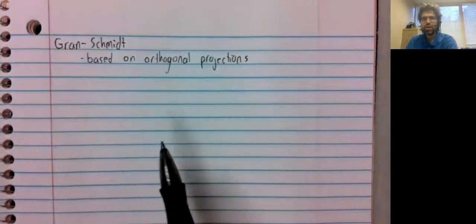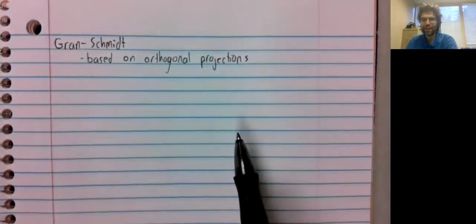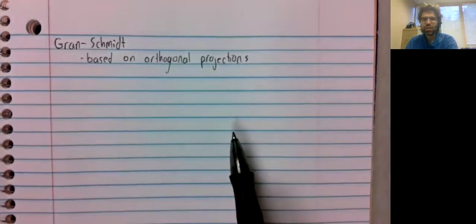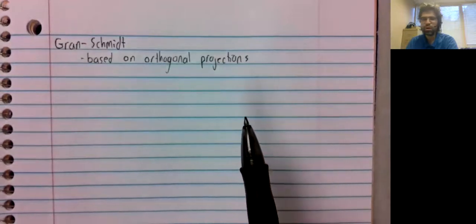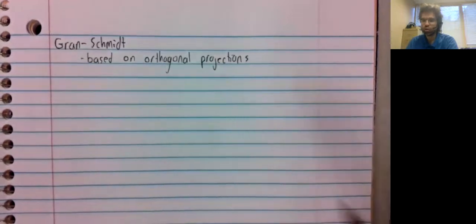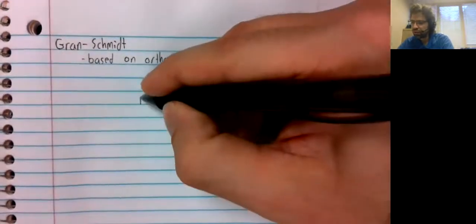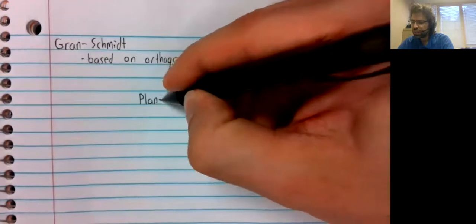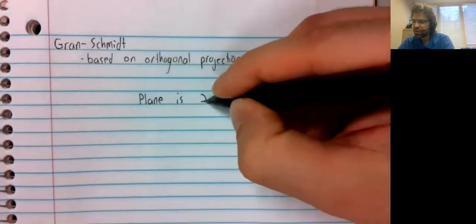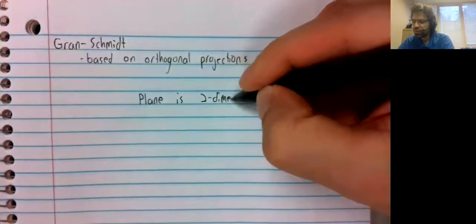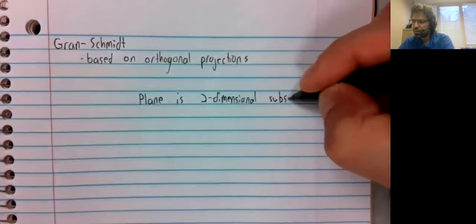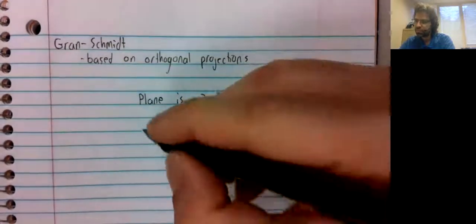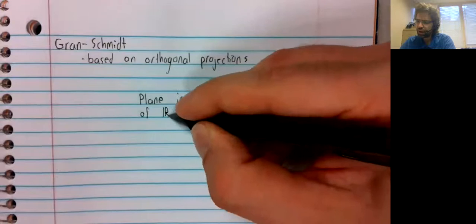Let's think of this sheet of paper as a plane. But let's think of it as a plane in three-dimensional space. So you could come up off the paper or go down under the paper. This plane is a two-dimensional subspace of R3.